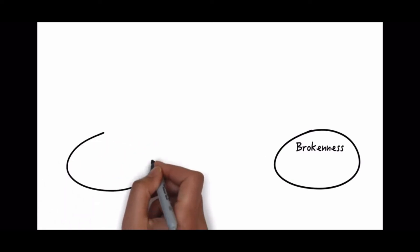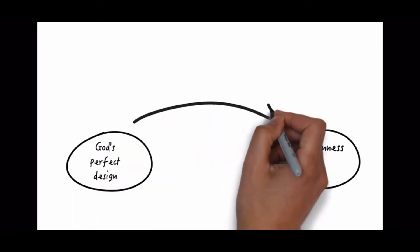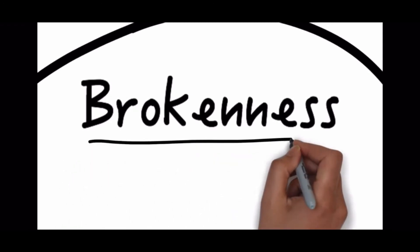But this is not God's original design. God has a perfect design, and the way that we have gotten ourselves into brokenness is through something that the Bible calls sin. Sin is turning away from God's design and pursuing our own way, and that leads us to brokenness. Brokenness eventually leads us to death, and this death will separate us from God forever.